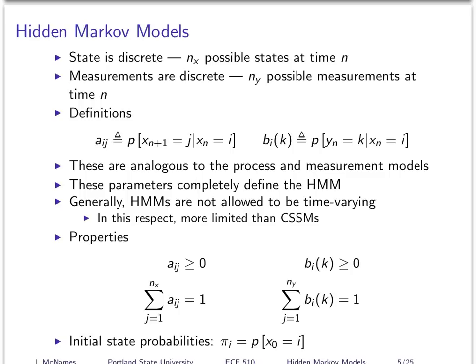Hidden Markov models are different in a number of respects. The first thing is that the state is discrete — at any given time there are N_x possible states the system can be in. As an example, one might be what word is being emitted or sensed out of a finite vocabulary of words. If you've got a hundred different words and only one can exist at any given time, then the word being spoken might be the state your system is in.